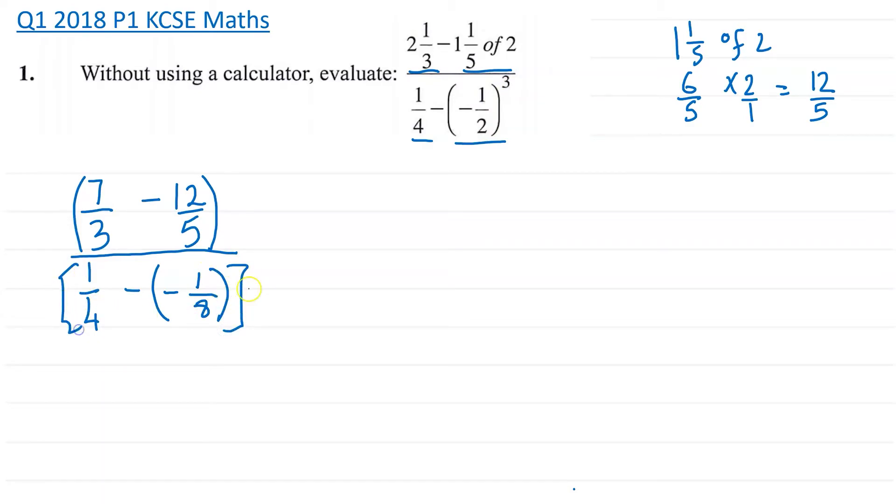So this whole part here, I'm going to put these brackets here. This is now going to be equal to 7 over 3 minus 12 over 5, and I'll write it this way. So that's going to be divide, so that's that line there, divide all this 1 over 4, negative and negative that gives you plus, and then we still have 1 over 8.